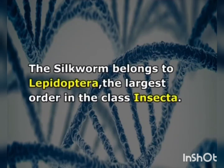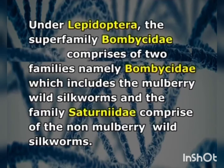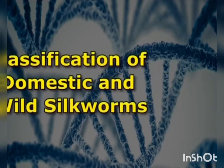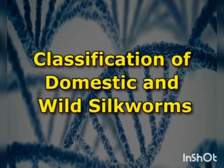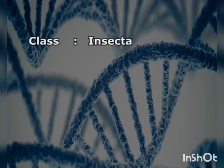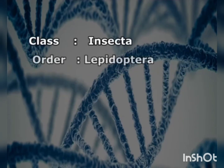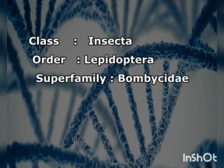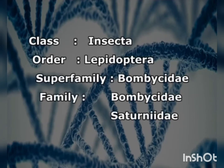The silkworm belongs to the order Lepidoptera, the largest order in the class Insecta. Under Lepidoptera, the superfamily Bombycoidea comprises two families: Bombycidae, which includes the mulberry wild silkworms, and the Saturniidae family, which comprises the non-mulberry wild silkworms. The silkworms fall under class Insecta, order Lepidoptera, and superfamily Bombycoidea, under which the two families Bombycidae and Saturniidae are given.